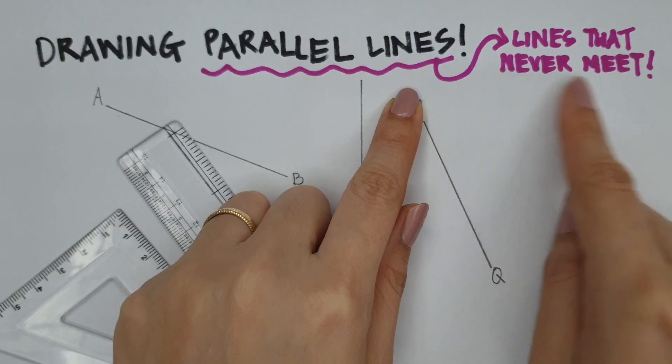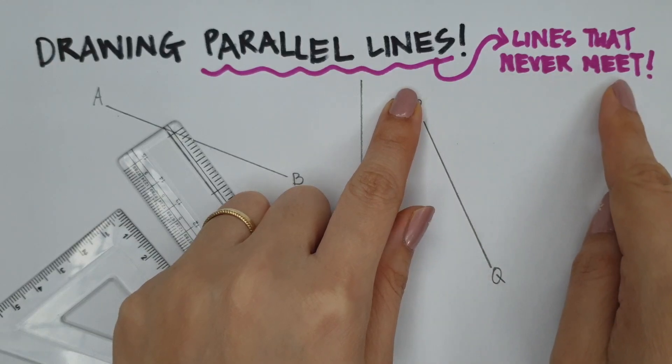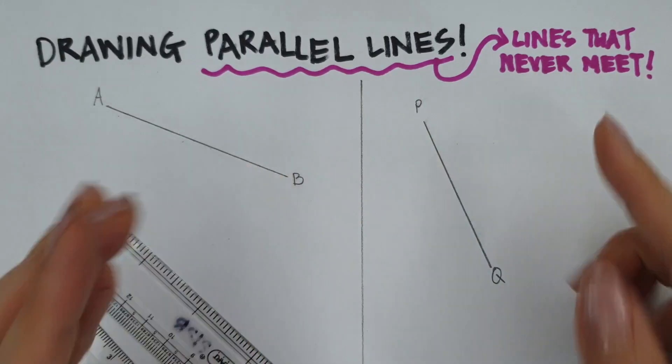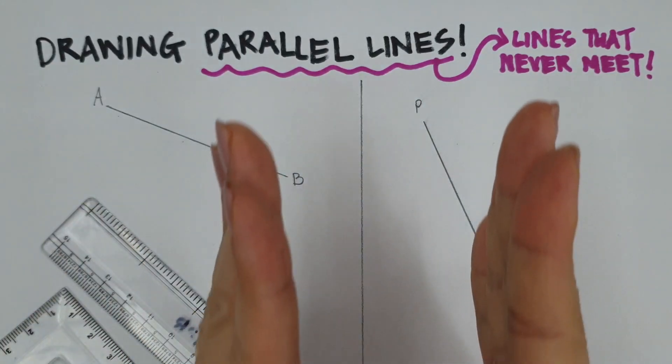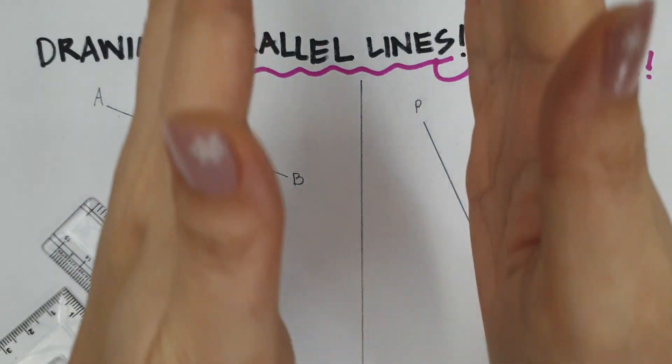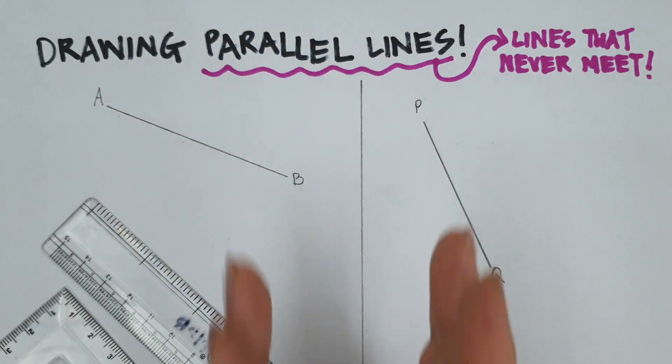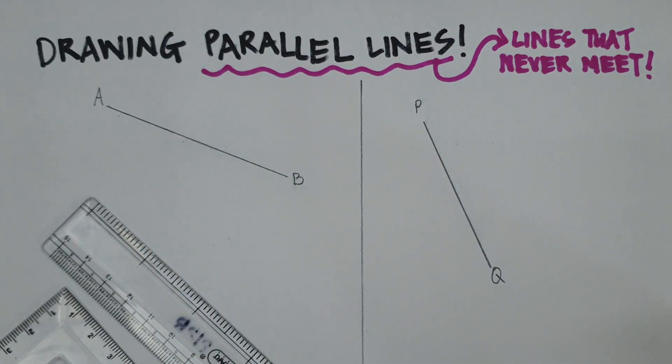Parallel lines are lines that never meet. Parallel lines are lines that go on and on and on and on and they never ever intersect or meet each other.